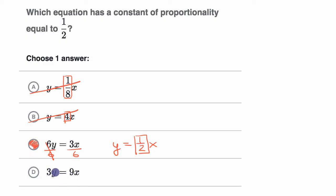And we can verify that this one doesn't work. If you want to solve for y, you divide both sides by three. And you get y equals nine divided by three, which is 3x. So here our constant of proportionality is three. So we can feel good about choice C.